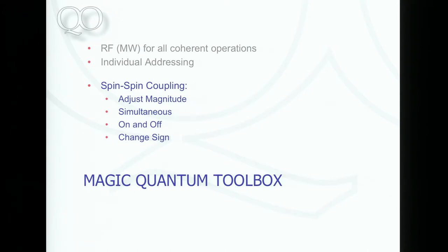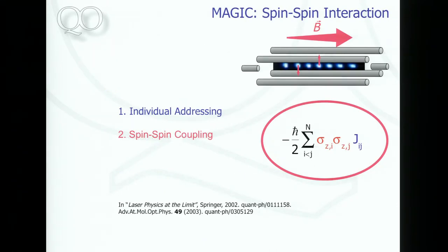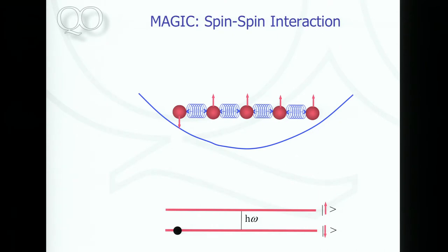Now we come to conditional quantum gates. We need to not only talk to individual qubits but also have them interact in a prescribed way. That's under the heading of spin-spin coupling. This magnetic field gradient allows you to individually address your ions, but it also allows spin-spin coupling — the coupling of ion i to ion j with some coupling constant.